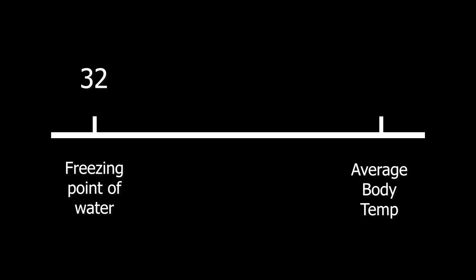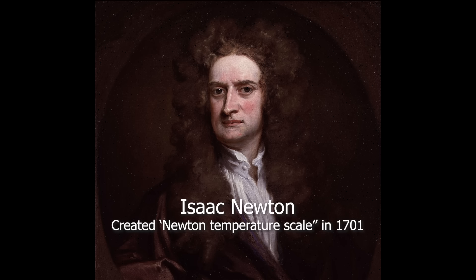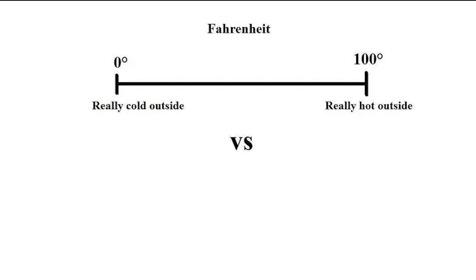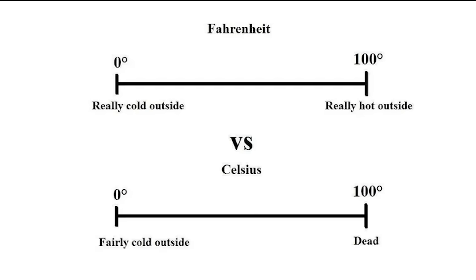Fahrenheit originally set the high end of his scale so that 96 is the average body temperature. This actually makes sense since this scale represented our body's perception of temperature, which is an idea that even Isaac Newton supported back in 1701. This makes Fahrenheit's zero to 100 range reflect what we humans consider cold or hot, not what water does.